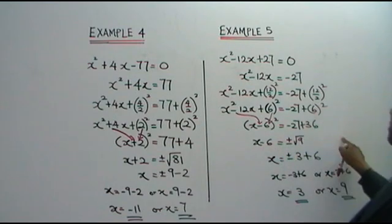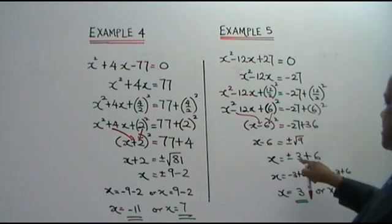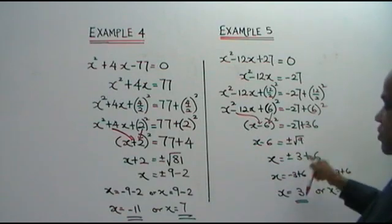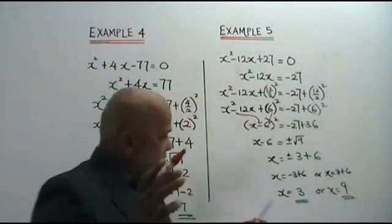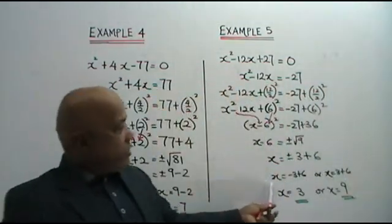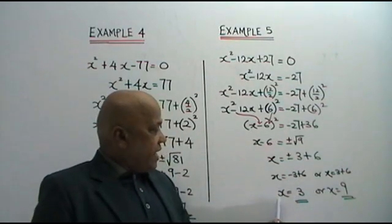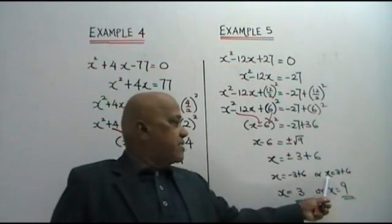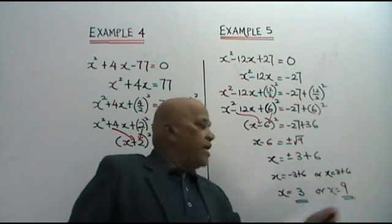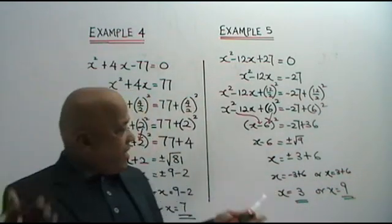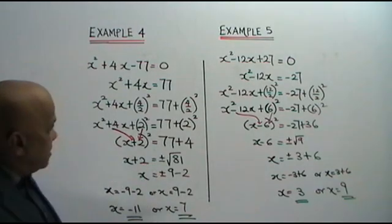Bring minus 6 to the other side, plus 6. Plus or minus square root of 9 is plus or minus 3. So you get x equals to negative 3 plus 6, where x equals 3, or x equals 3 plus 6, which is 9.